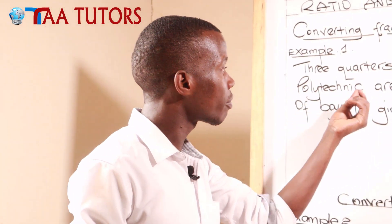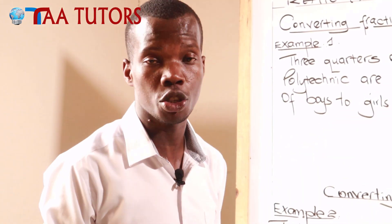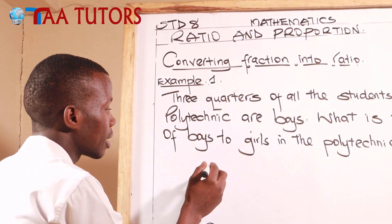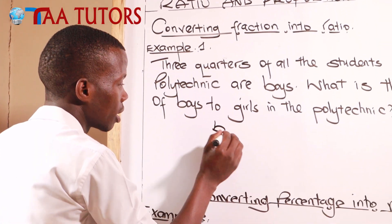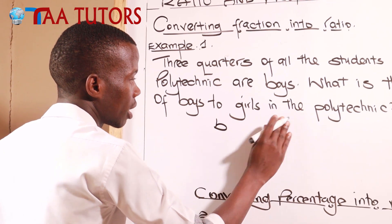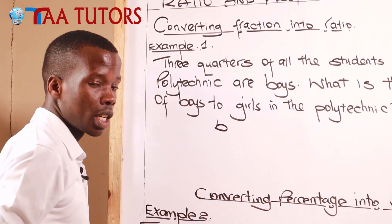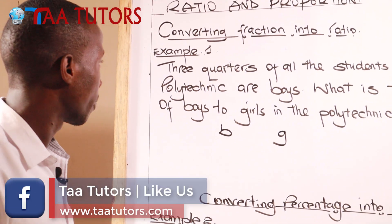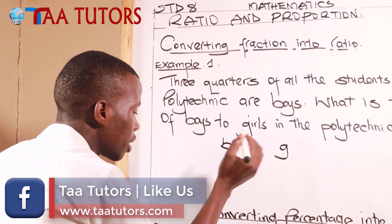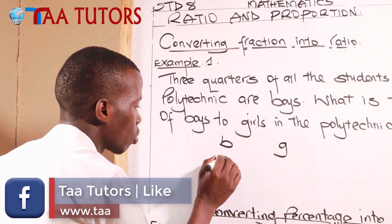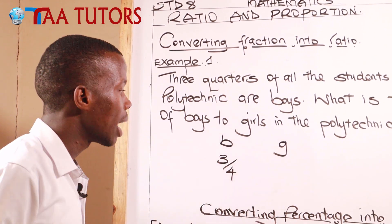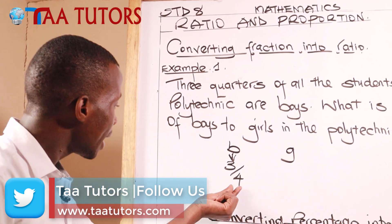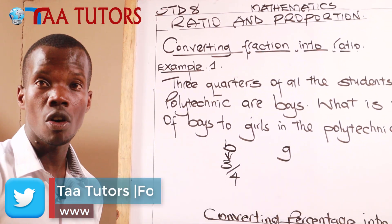We have been given the fraction of boys, but we don't have the fraction of girls. We have boys and girls in this polytechnic. Let letter B represent boys and letter G represent girls. We are told that three quarters of the students are boys, so that is the fraction of boys. From here we can get the fraction of girls.